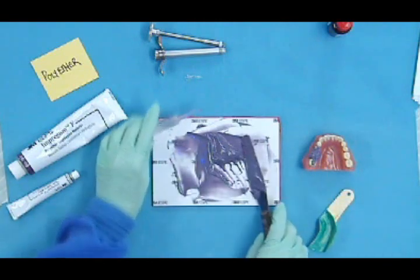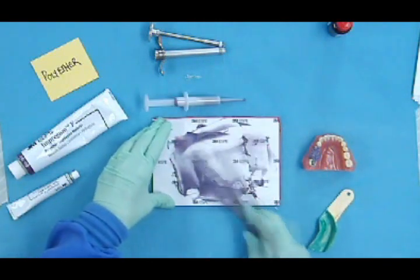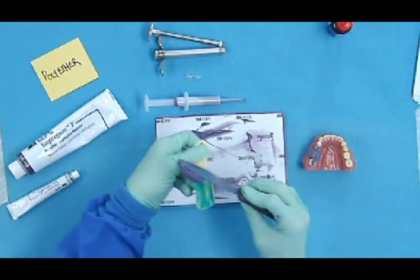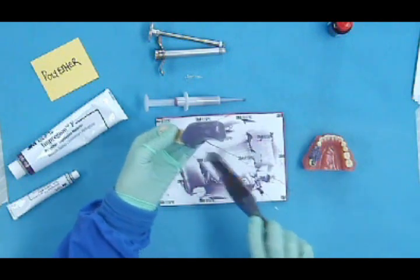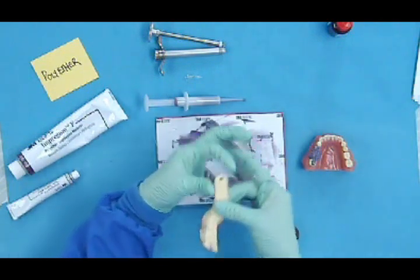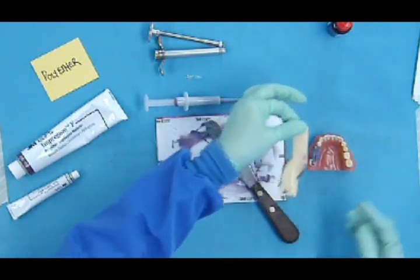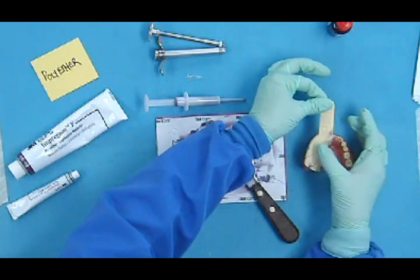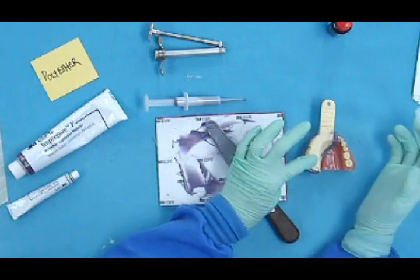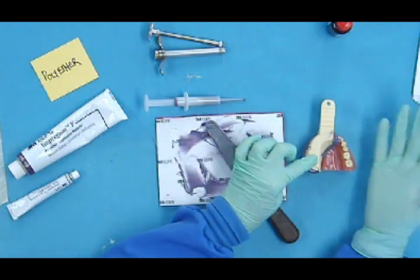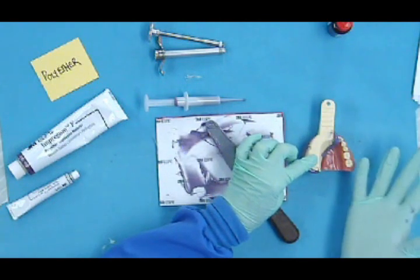So the prep is covered. The adjacent teeth are covered. While he's doing that or she's doing that, I'm going to be loading the impression tray. Then passing it to the doctor like this. And the doctor will seat it in the patient's mouth. And it's your turn to hold the impression for a little bit until the material is set.